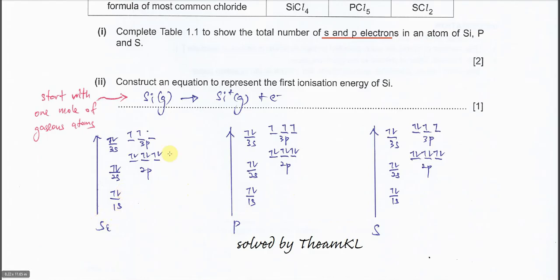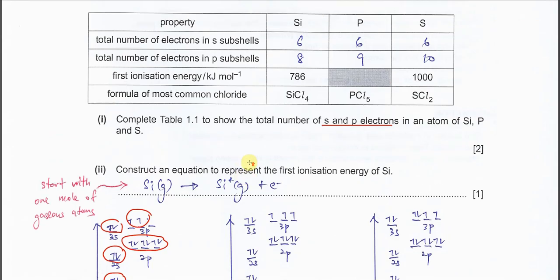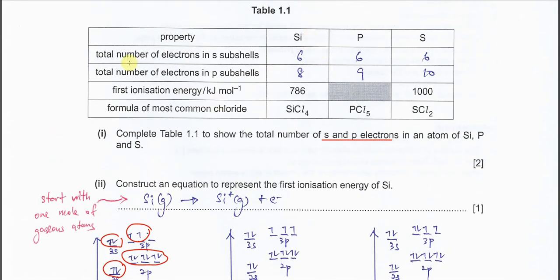For silicon, total s electrons: 1s, 2s, 3s gives 6 electrons. Total p electrons is 6 plus 2, equals 8. Therefore, for silicon, total number of electrons in s subshells is 6, in p subshells is 8.